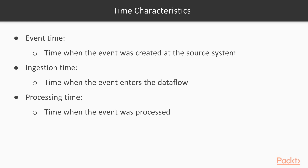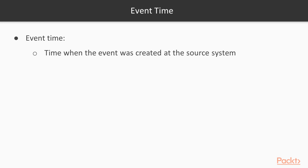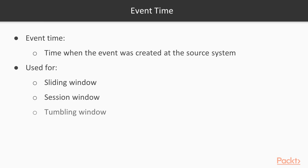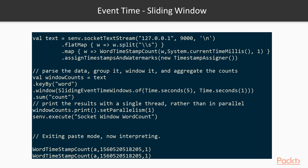We'll look at these through hands-on examples. First, let's look at event time — the time when the event was created at a source system. To illustrate this, we'll revisit the concepts of tumbling window, sliding window, and session window from previous videos, because those are very much tied to event time, ingestion time, and processing time. We'll have a few examples using event time with sliding window, session window, and tumbling window.